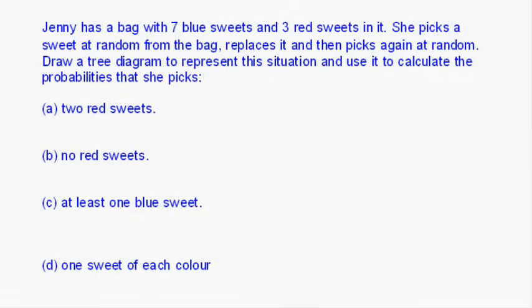Hi, this is a probability question that we're going to solve using a tree diagram, but let's just read the question first. Jenny has a bag with seven blue sweets and three red sweets in it. She picks a sweet at random from the bag, replaces it, and then picks again at random. Draw a tree diagram to represent this situation and use it to calculate the probabilities that she picks: